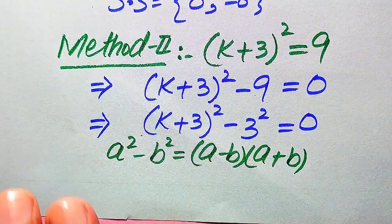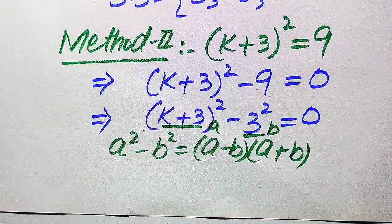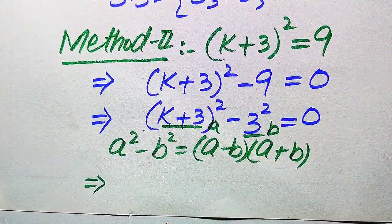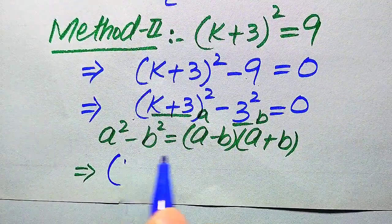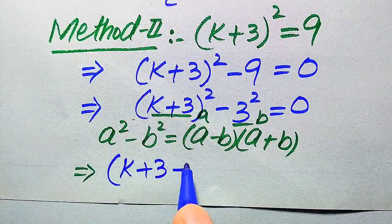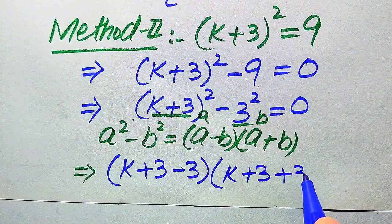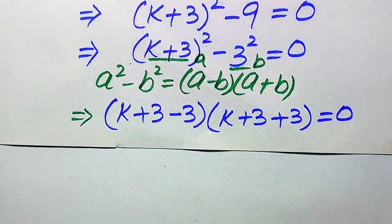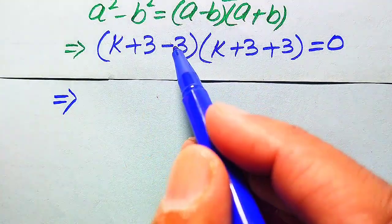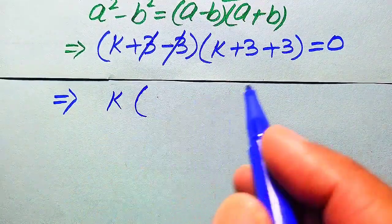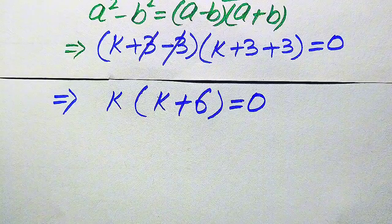Here a = (k + 3) and b = 3. Applying the formula, we get (k + 3 - 3)(k + 3 + 3) = 0. In the first factor, -3 and +3 cancel, leaving just k. In the second factor, 3 + 3 = 6, giving us k(k + 6) = 0.